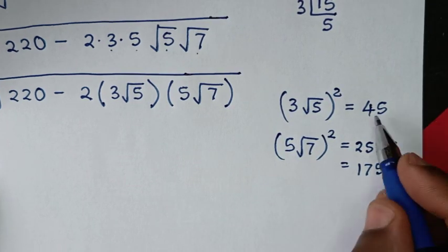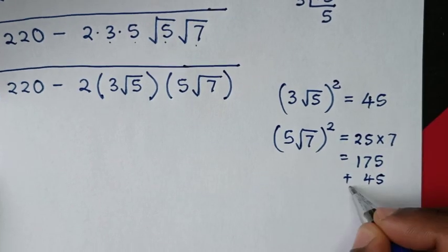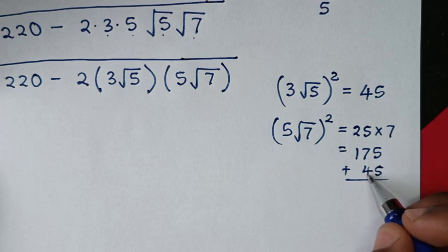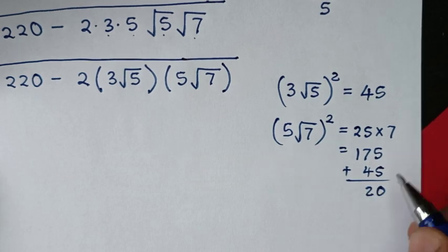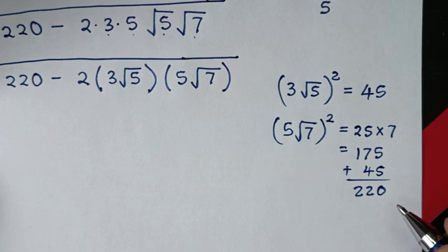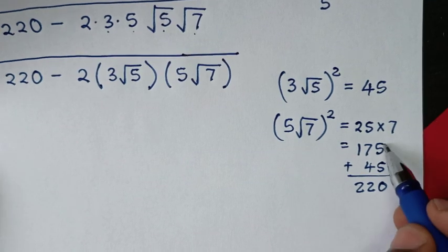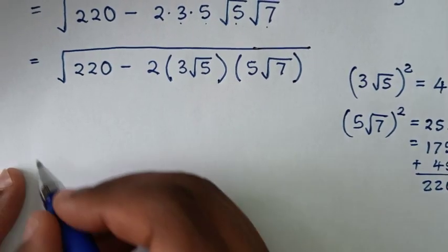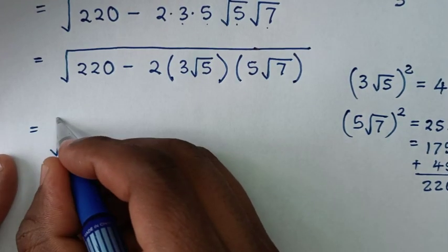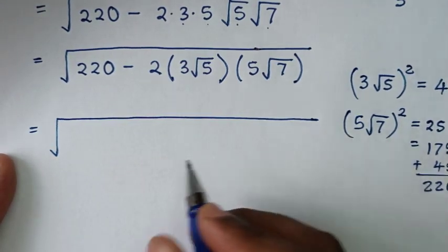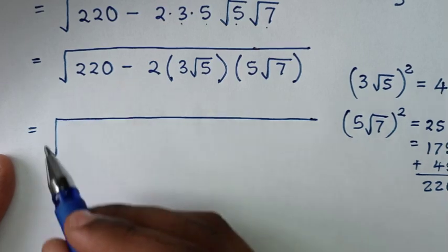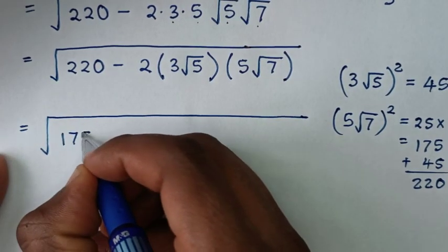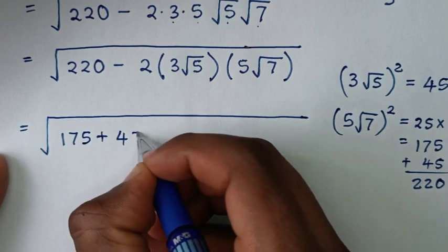We add 45 and 175: 5 plus 5 is 10, carry 1; 7 plus 4 plus 1 is 12, carry 1; 1 plus 1 is 2. So the sum of 175 plus 45 is 220. Therefore, square root of 220 is the same as square root of 175 plus 45.